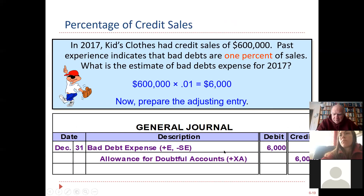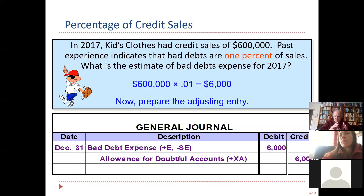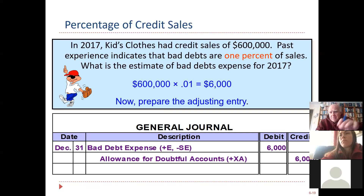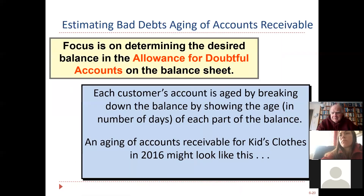All you do is look at your sales multiplied by 1%, 2%, whatever. Debit bad debt expense, credit the allowance, and you're done. Very simple method, but it is not a good method, and I don't think many companies use it — because it doesn't take into consideration what might have happened to your old receivables. It's only looking at one month and just layering on new allowance every month.